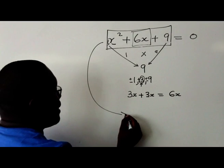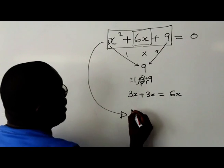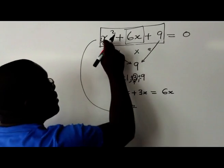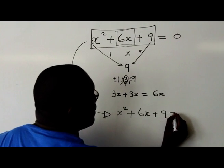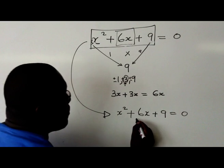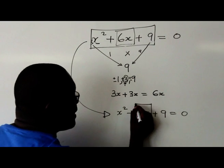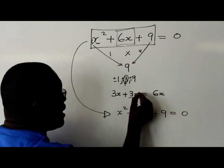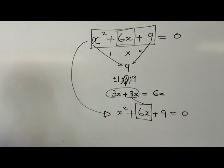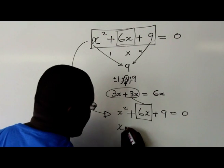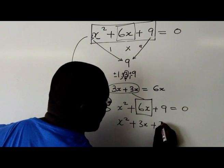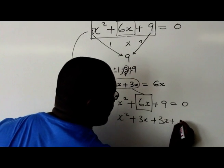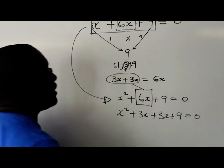I'll rewrite the equation: x squared plus 6x plus 9 equals 0. But now I'm going to replace the 6x with the combination I found, which is 3x plus 3x. So it becomes x squared plus 3x plus 3x plus 9 is equal to 0.